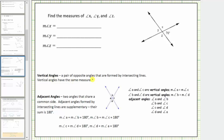Vertical angles are opposite angles that are formed by two intersecting lines, and vertical angles have the same measure. Looking at this diagram of two intersecting lines, we have two pairs of vertical angles. Angle B and angle D are vertical angles and have the same measure. Angle A and angle C are vertical angles and have the same measure.